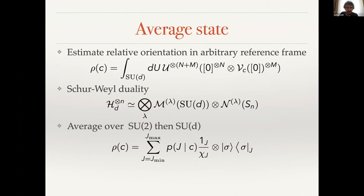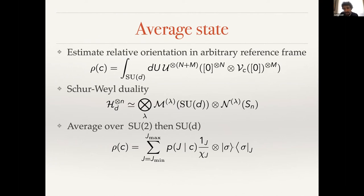This tells us that these averages can be solved by a projection on the irreps labeled by lambda and a complete depolarization in the unitary group average. Another trick we use is to perform first an average over SU(2) in the plane spanned by the two states — this simplifies the problem greatly and makes the second average over the whole space quite trivial. The result is that the state is block-diagonal in blocks labeled by the total angular momentum j, with the probability of obtaining a given j depending on the fixed overlap c.